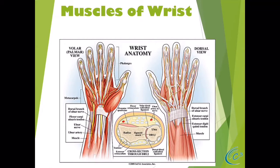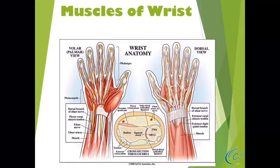At one point, carpal tunnel was the bane of the workers' comp world. Fortunately, because of newer findings in the literature, we know that most carpal tunnel syndrome situations are not occupational events. This does not occur because somebody did a half hour of typing on a new computer. The literature is rife with citations indicating this does not occur occupationally and doesn't occur at a one-time event. So if somebody is alleging carpal tunnel syndrome, you really need to get a very detailed history of when this occurred — if it's a one-time event, that is simply not true.